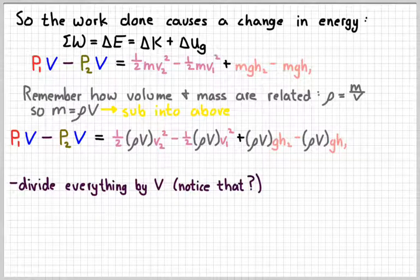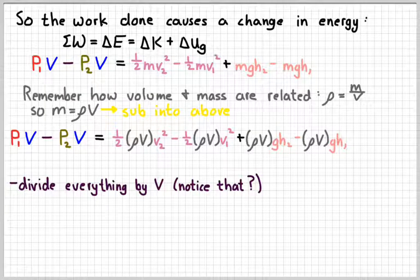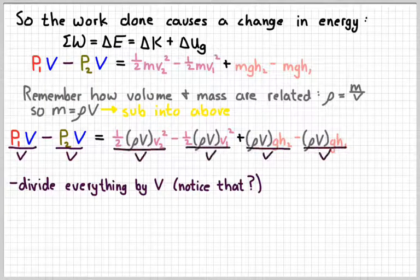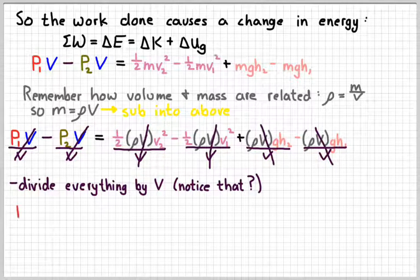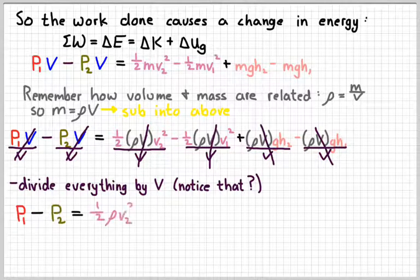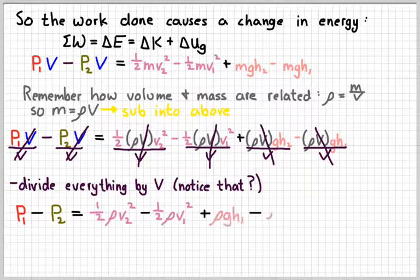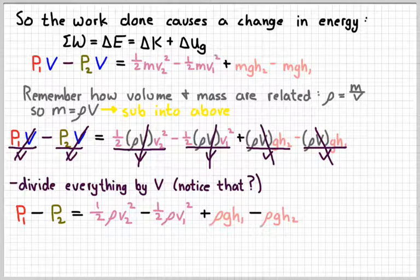Did you notice that every term in there has a capital V? So let's divide everything by capital V and get rid of it. So if I divide every term by the volume, now my equation looks a little bit simpler. It's still long and complicated, but now it's in terms of things we can actually measure. Pressures we can measure, densities we can measure, velocities we can measure, heights we can measure. So we don't have to go through and choose a particular volume for any given problem. The volume canceled out.